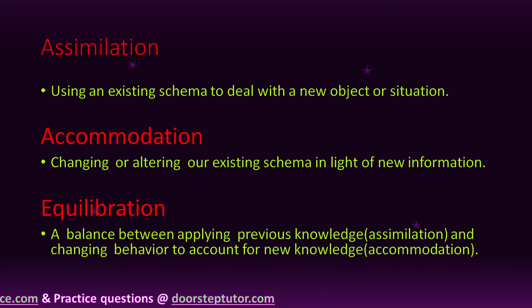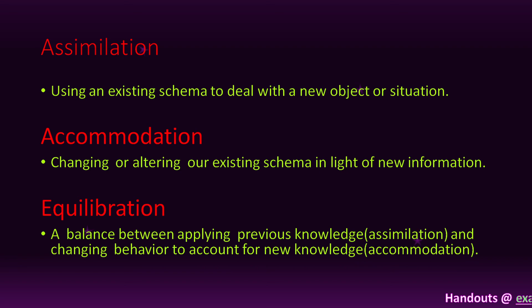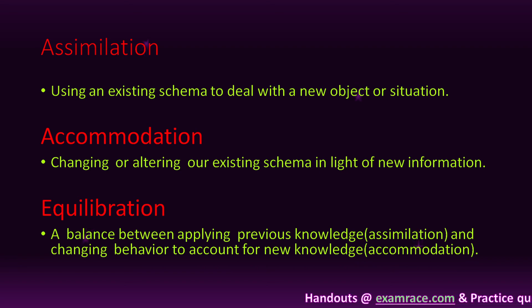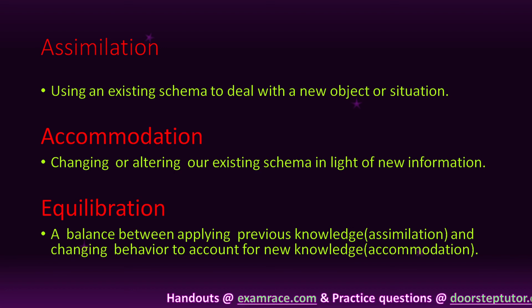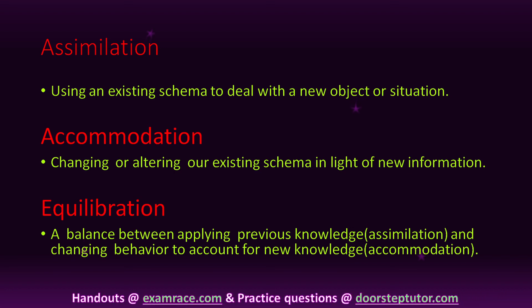So there are two things: cognitive structure and cognitive functioning. Cognitive structure contains the cognitive schema, and cognitive functioning contains three parts — assimilation, accommodation, and equilibration. My topic is completed. Thank you.